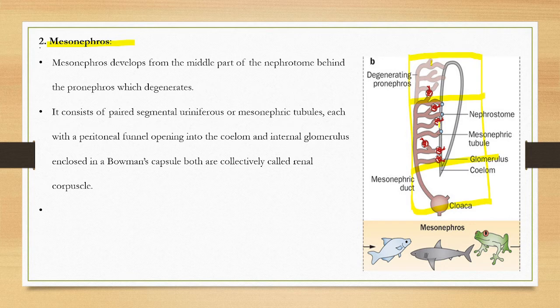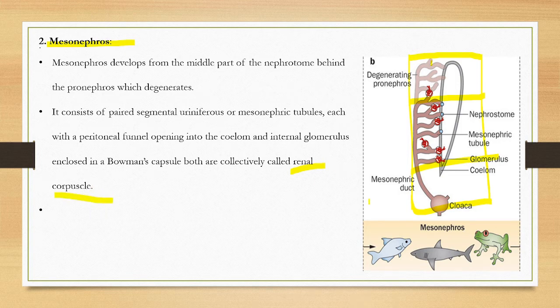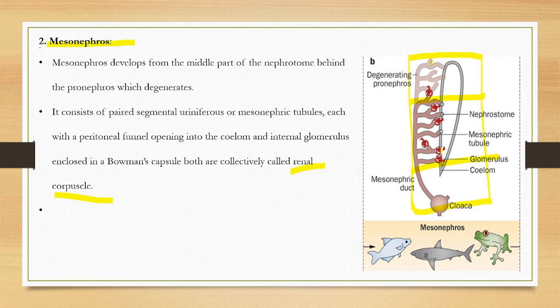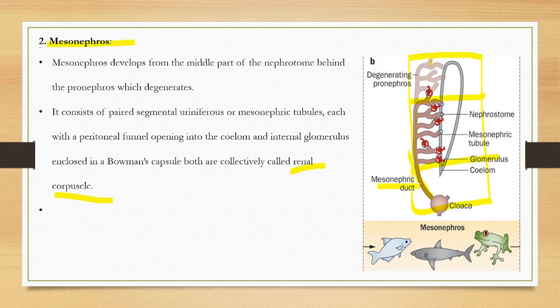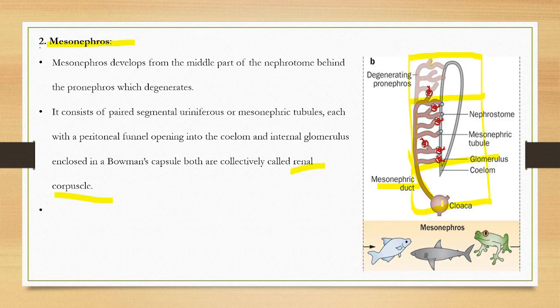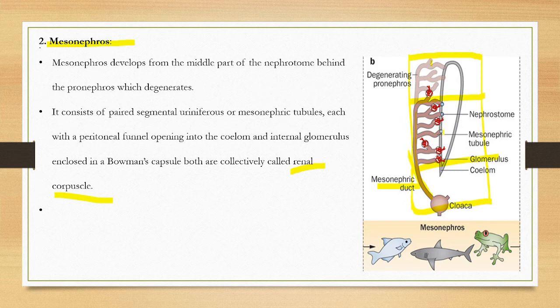These mesonephric tubules open into a common duct, this is called a mesonephric duct or Wolffian duct, which opens to the cloaca. The glomerulus is in the Bowman's capsule. This is a direct connection. That is one major difference between pronephric and mesonephric duct.